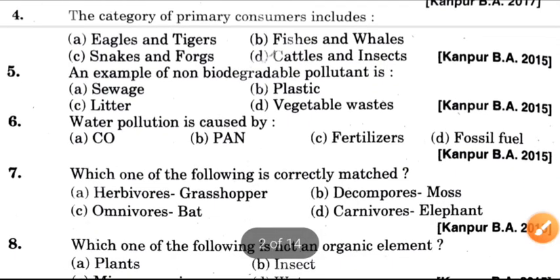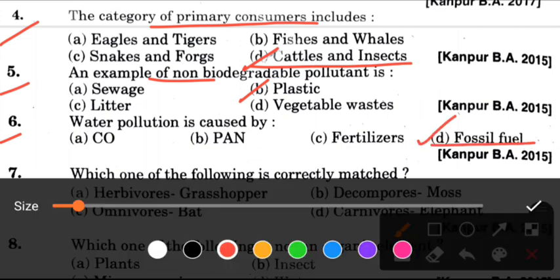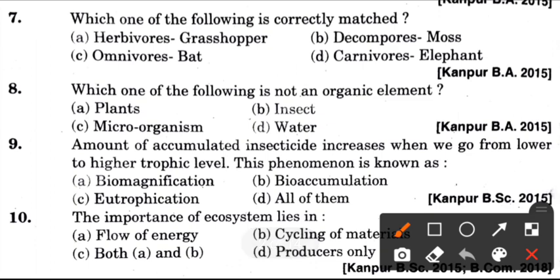Fourth question: The category of primary consumers includes? Answer is D, which is Cattles and Insects. Next question: An example of non-biodegradable pollutant is? Answer is B, which is Plastic. Now, the water pollution is caused by? Answer is D, which is Fossil Fuels. Seventh question: Which one of the following is correctly matched? Answer is A, which is Herbivore - Grasshopper.